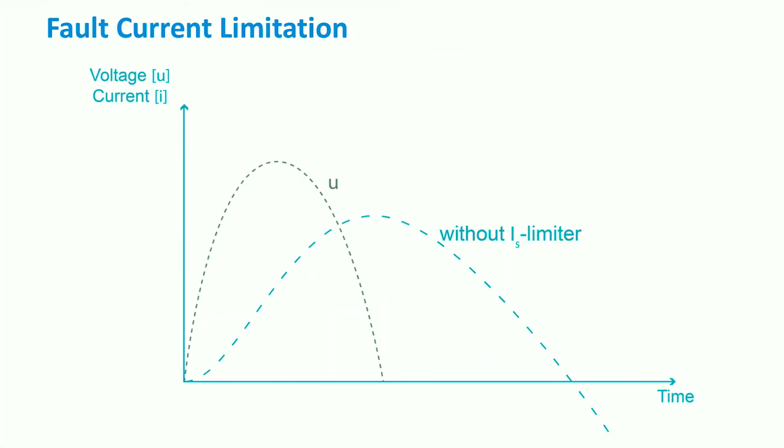To mitigate the negative impact of high fault currents, fault current limiters are installed to limit the current in case of faults. As we can see, the fault current limiter is responsible for suppressing the large fault current after the fault.